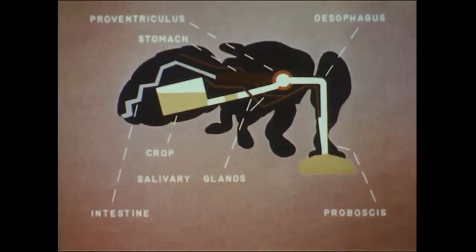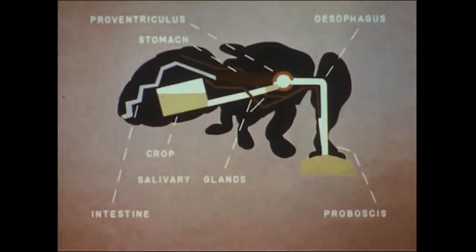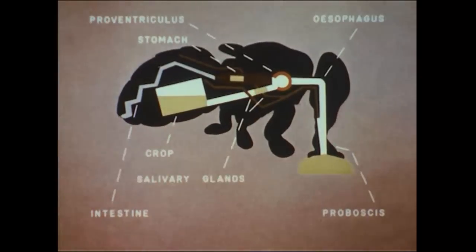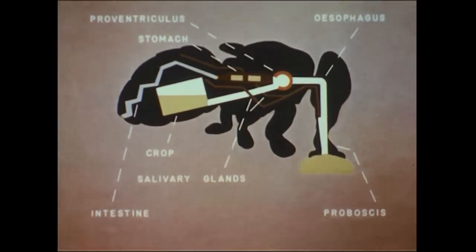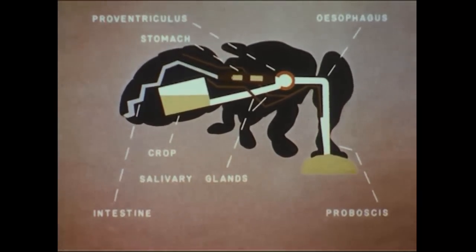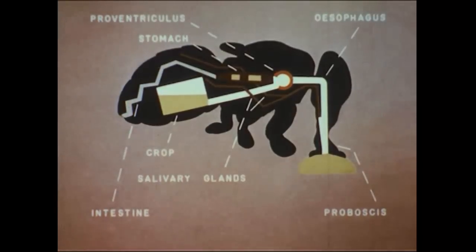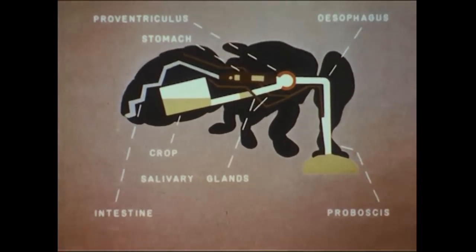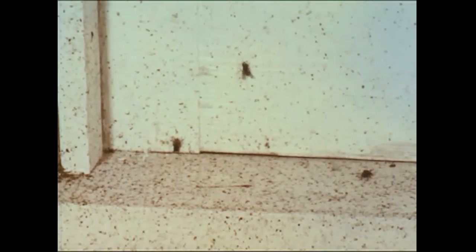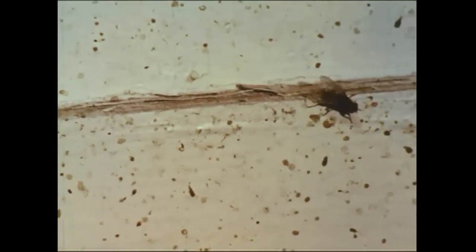After being pre-digested in the crop, the housefly passes its food a little at a time from the crop, and the proventriculus now opens the passageway to the stomach. As digestion is completed, the waste products are expelled through the digestive tract, still laden with the germs or parasites swallowed by the fly. The familiar fly specks are the regurgitations and feces of flies. Many of them may be deposited close together on surfaces frequently visited by flies.